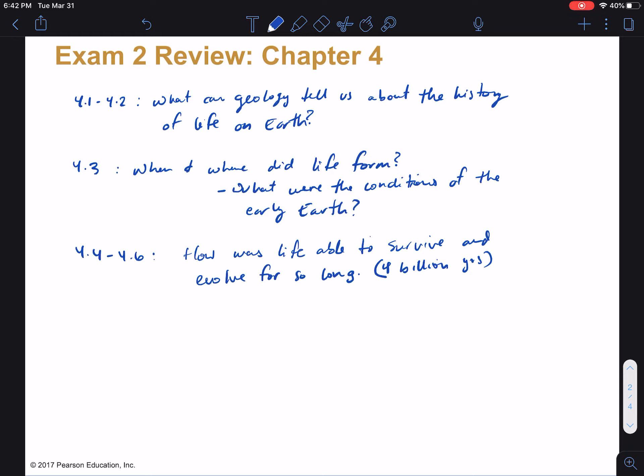So this sort of set the stage for talking about greenhouse gases and warming the Earth and the carbon dioxide cycle, which all require the plate tectonics that we talked about in 4.4. And then also in 4.5, we talked about climate cycles, snowball Earth, basically big picture, how was the climate hospitable for so long?